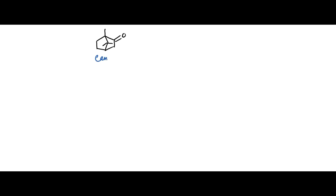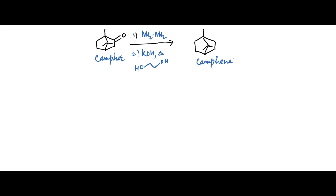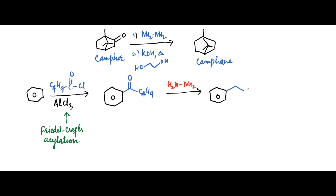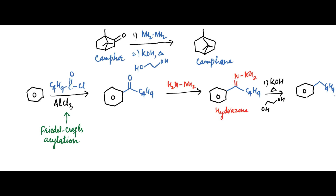Camphor, on treatment with hydrazine and then KOH base in ethylene glycol solvent, reduces the carbonyl group into a methylene group. In another example, benzene undergoes Friedel-Crafts acylation with N-butyryl chloride to attach an N-butyryl group on benzene. This product is then treated with hydrazine to form a hydrazone, which upon further heating with KOH base in ethylene glycol solvent reduces the carbonyl into a methylene group with loss of N2 gas. This step is the Wolf-Kishner reduction.